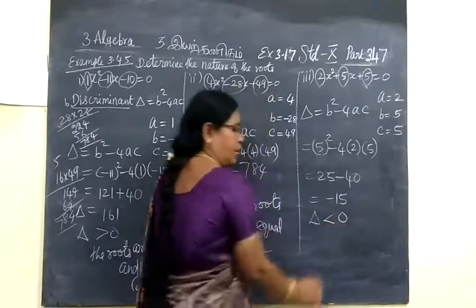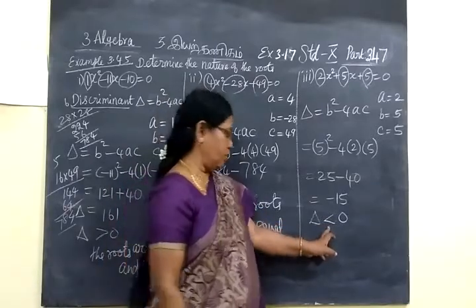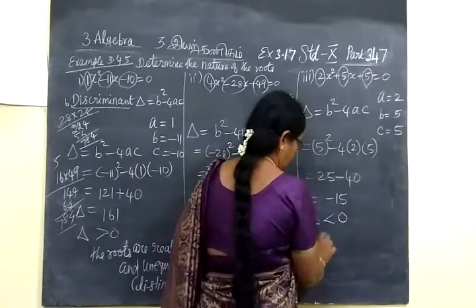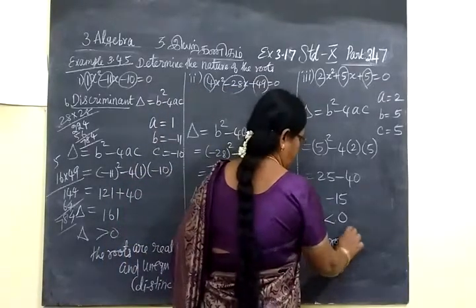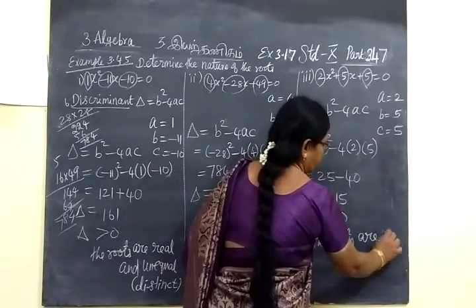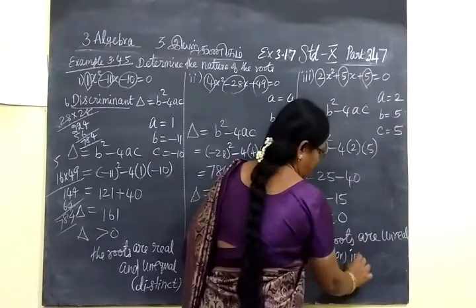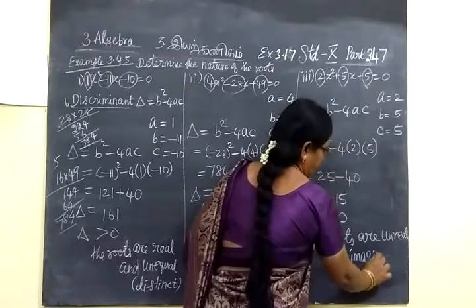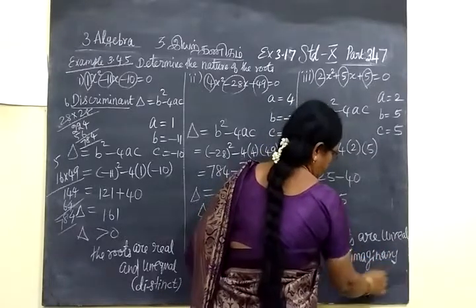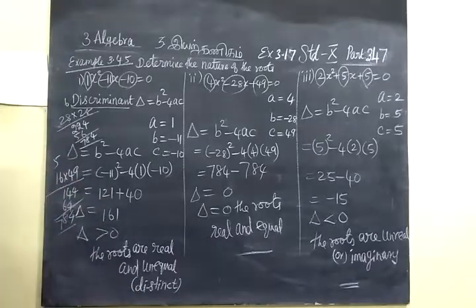The delta is less than 0, negative value. Since it is less than 0, the roots are imaginary, unreal. The roots are unreal or imaginary. This will come under two more questions. Thank you.